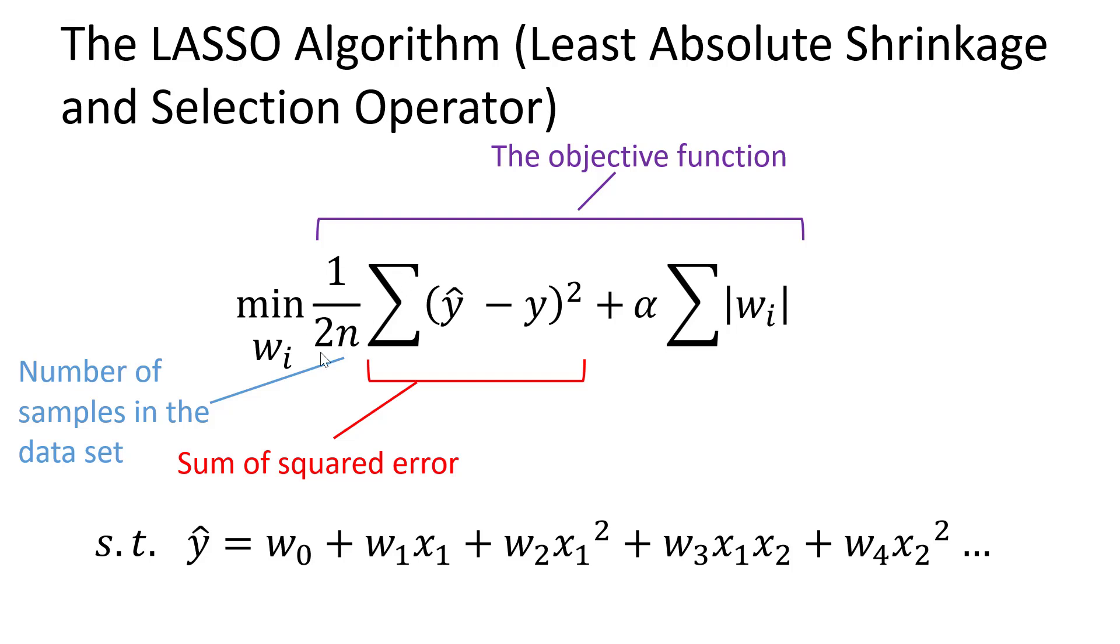There's still the sum of squared error piece but now there's this extra piece. We are normalizing this by the number of samples in the data set, so that's what n means. Then this other term, this is called the L1 norm and this is specifically the L1 norm of all the parameters.